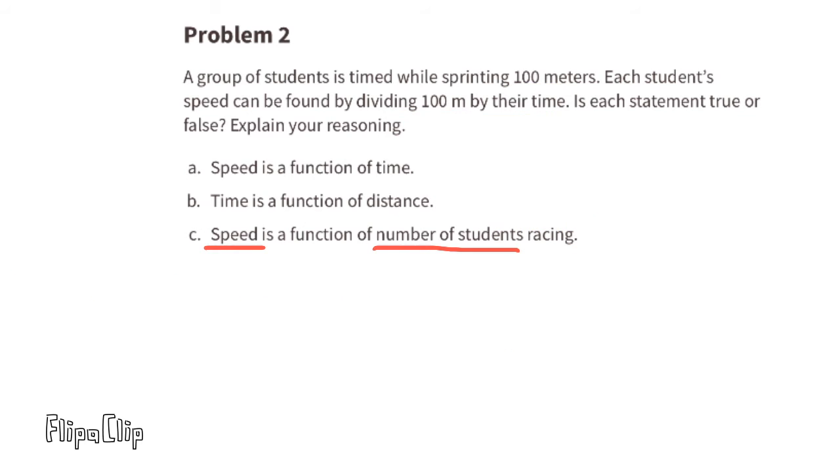C. Speed is a function of number of students racing. False. The speed doesn't get affected by the number of students racing. It doesn't matter if there's two students racing or 100 students racing.